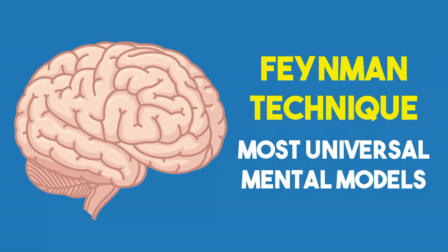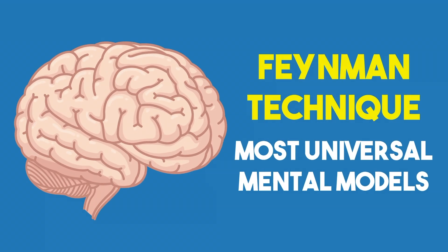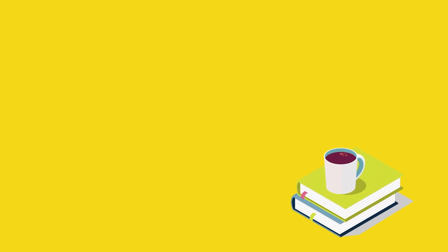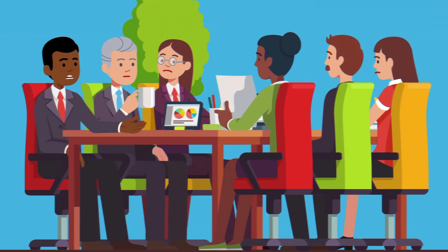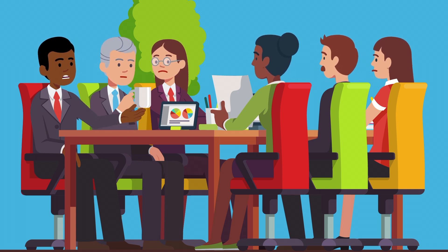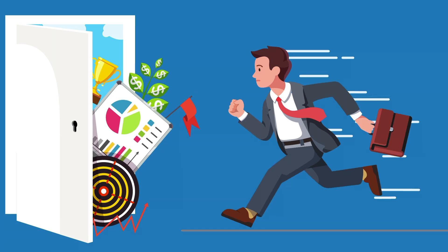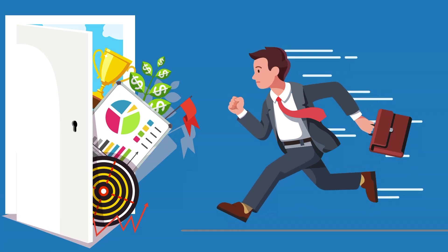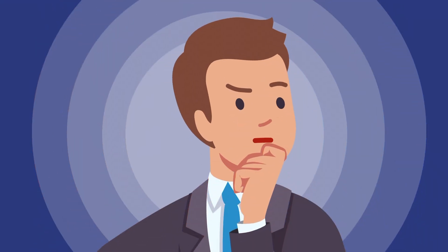The Feynman technique is one of the most universal mental models out there. It's great for academic learning, but that's not all it can do. You can use the Feynman technique to organize and explain your goals. Why do you want to achieve something? Why have you chosen your career path? Each of these questions could be a subject that you know, but you don't understand.